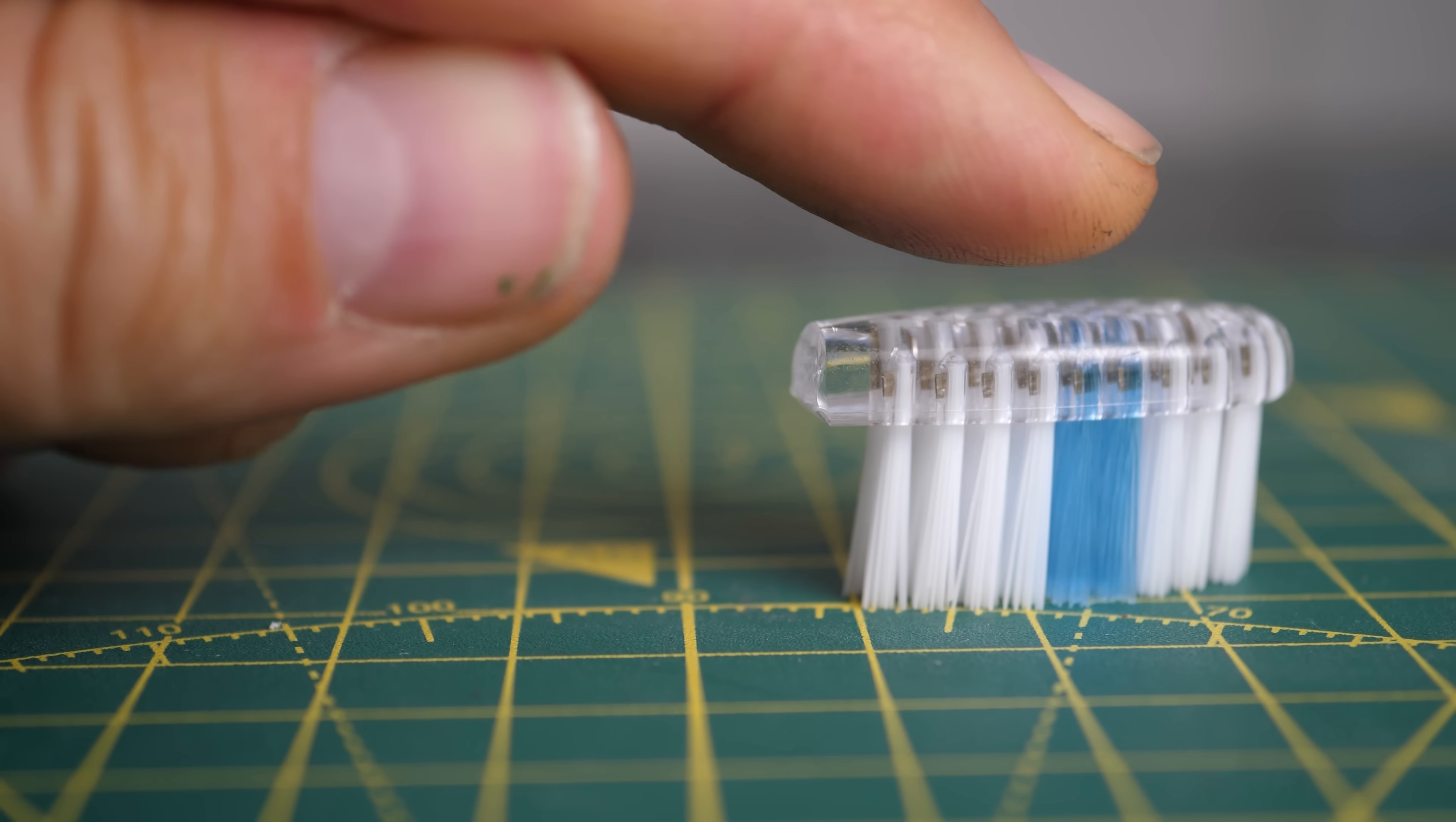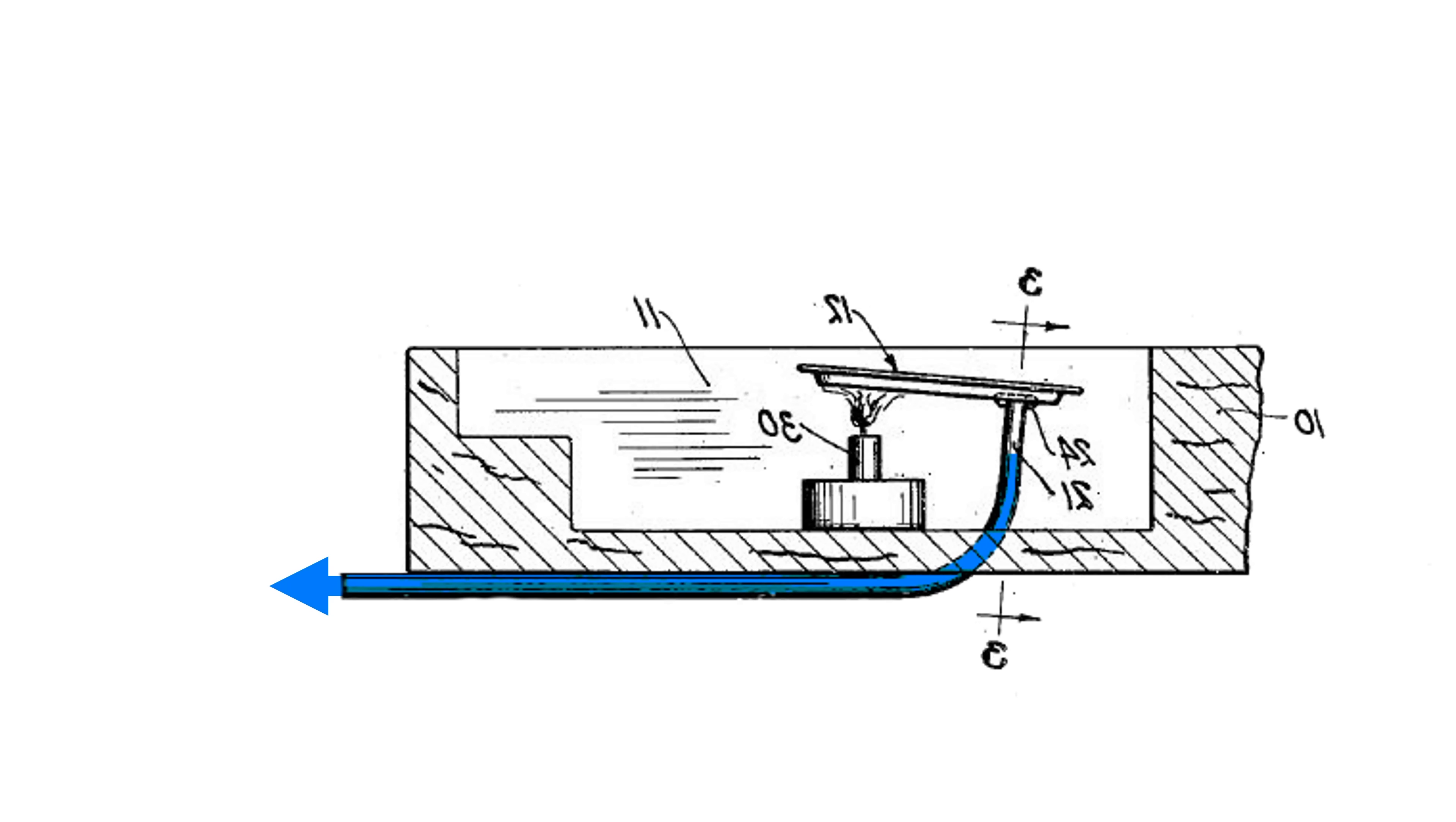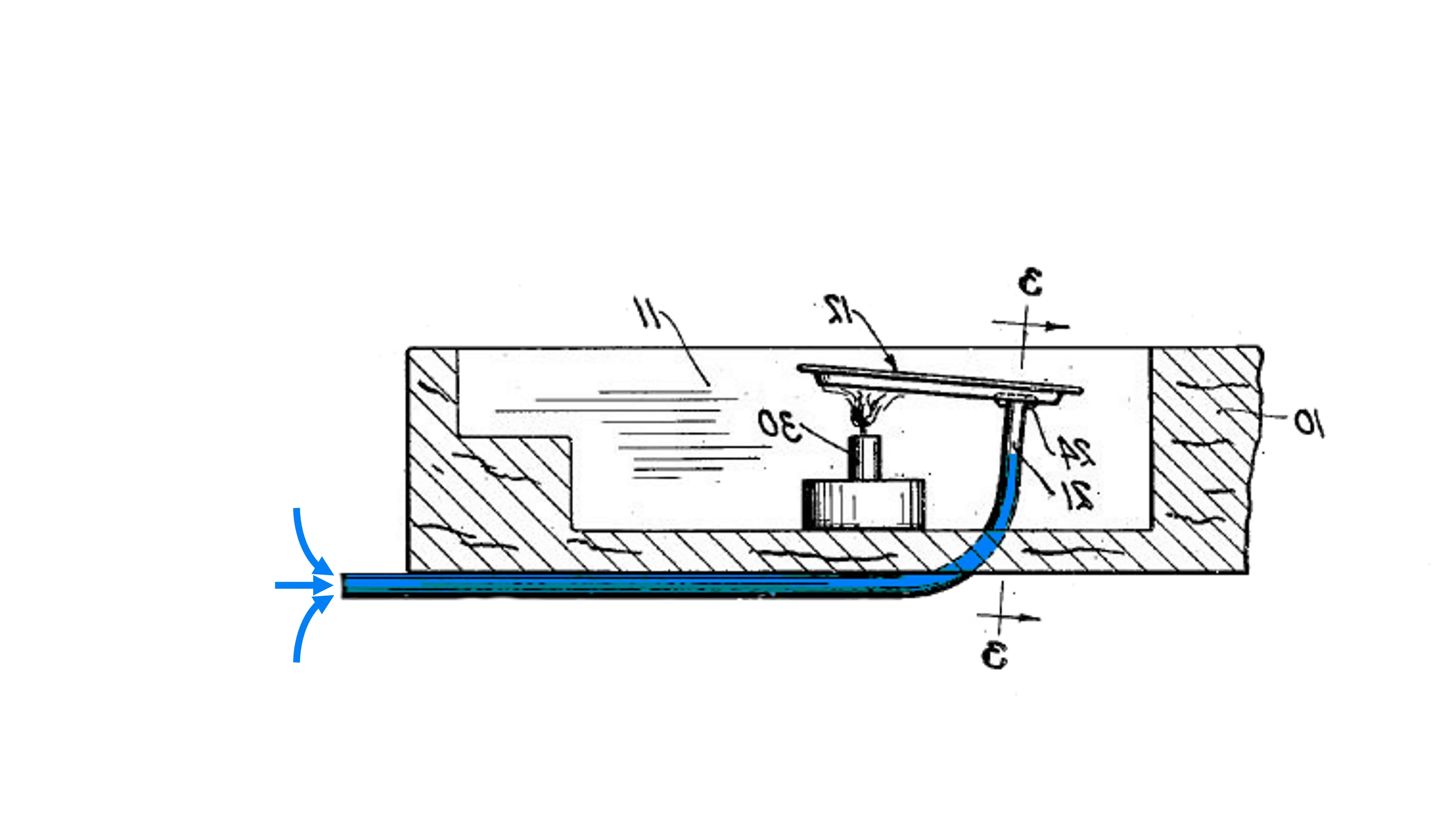So how does the reciprocating mechanism in the pop-pop boat lead to forward motion? Well, one suggestion is that as the jet of water leaves the exhaust, it's collimated—it's all moving in the same direction—and because every action has an equal and opposite reaction, that causes the boat to move forward. Whereas when the water is drawn back into the pipes, it's drawn in from all directions, so the reverse motion of the boat is weaker.